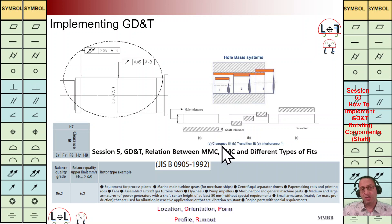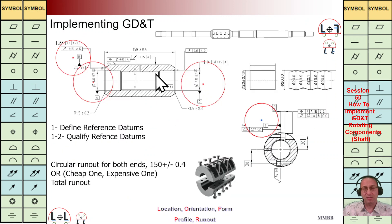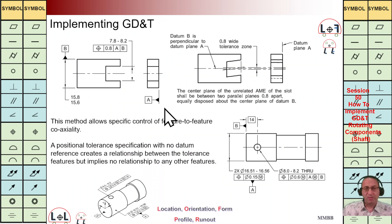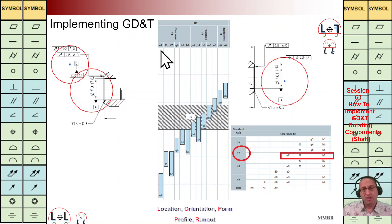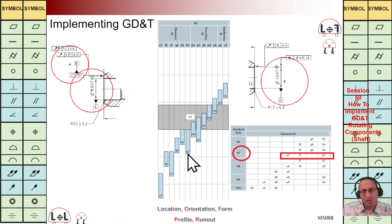Let's take a look at the fit system. We would like to have a clearance fit here because in the middle we are going to have a thread and there should not be contact — maybe a sliding fit. Here we would like to have a clearance fit. If the diameter is 40, we apply this rule: for clearance fits it is H7 for the hole, and we can use e7, f6, or f7 for the shaft. In this example we have used H7 — there is no interference between these two parts.